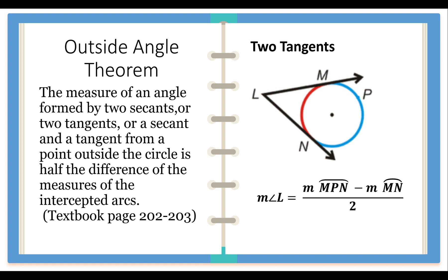There are three scenarios involved. Let's take a look at the first scenario: two tangents. We have ray LM and ray LN as the tangents of the circle meeting outside at point L, forming angle L. We can use a single letter to name the angle because there is only one angle involved; otherwise, you have to use three letters. The two intercepted arcs are the blue arc MPN, which is a major arc, and the red arc MN, which is a minor arc. So we say the measure of angle L is equal to the difference of the measure of arc MPN and the measure of arc MN, divided by two.